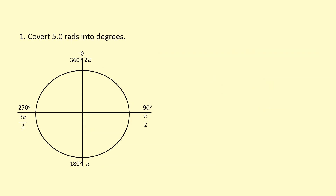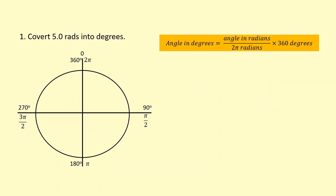Then we're going to practice going the other way — turning 5 radians into degrees. We can use this formula here. Basically, take the radians and divide it by 2 pi, and multiply it by the equivalent of 2 pi, which is 360 degrees. That gives us 286 degrees, which is roughly around here.